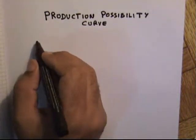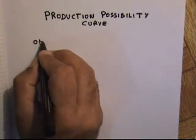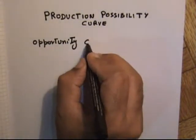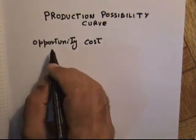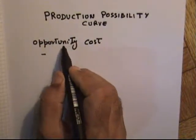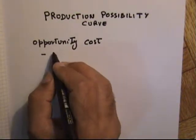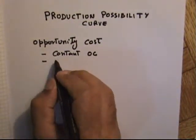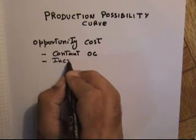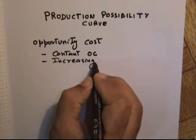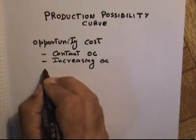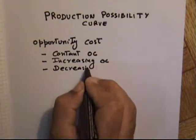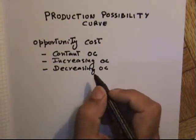The background concept of Production Possibility Curve is opportunity cost. From the previous tutorial, we learned that there are three types of opportunity cost: Constant Opportunity Cost, Increasing Opportunity Cost, and Diminishing or Decreasing Opportunity Cost.